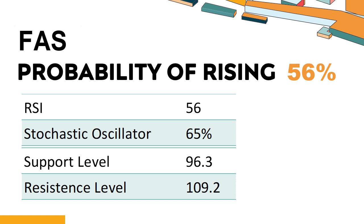When the stochastic oscillator stays between 50 and 80, it may indicate that the stock is experiencing a mild downtrend with some selling pressure. An oversold signal could indicate that a stock is reaching a potential buying opportunity. The probability of FAS share price rising is 56%. Combining multiple technical analysis indicators, FAS has five bullish signals and three bearish signals.